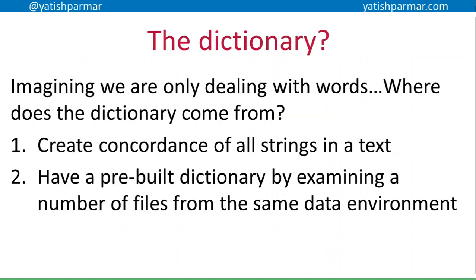Now, thinking about this whole dictionary idea — first of all, imagine we're only dealing with words. We've got two different methods to create this dictionary. The first one is what we call a concordance, which is unique to the actual text we're working with. We examine that text, extract all the unique patterns within it — all the different unique words — and that's our concordance, because we've just created a dictionary. The other way is, say, if I'm working for the Vatican and we're going to compress all of our old Latin texts. We would scan through all those texts, parse them, figure out all the patterns in there, and create a dictionary. So anytime we want to compress a file, we replace the patterns within that file with our dictionary references from the pre-built dictionary.